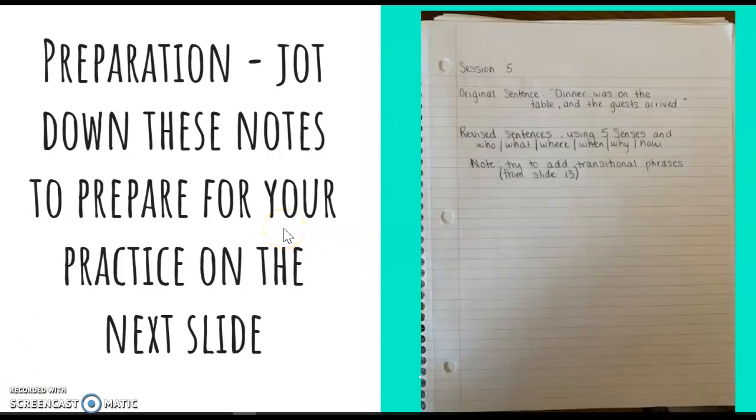Let's do some practice. In preparation for the practice on the next slide, I want you to go ahead and write this down into the next blank page in your notebook. This will prepare you for the practice that we're about to do in just a moment. I'm going to give you an original sentence. Dinner was on the table and the guests arrived. I want you to revise this sentence here using your five senses, your who, what, where, when, why, and how, and also your senses, your smell, your taste, your touch, your sight, your sound. I also want you to try adding transitional phrases. Go ahead and jot this down into your notebook and pause the video here.